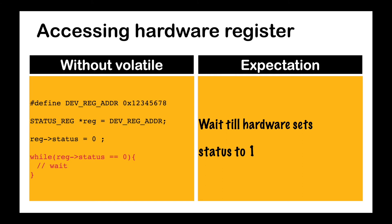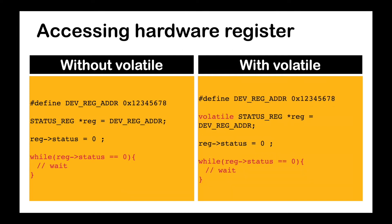Let's say we expect to wait until the status value in this register becomes 1. We use a structure pointer to access this register, then set the status value to 0 and wait in a while loop. In the left side scenario, when the volatile keyword is not used, the register status value in the while loop will not be updated if compiler optimization is enabled — the status value remains 0 as the value is not read directly from memory.